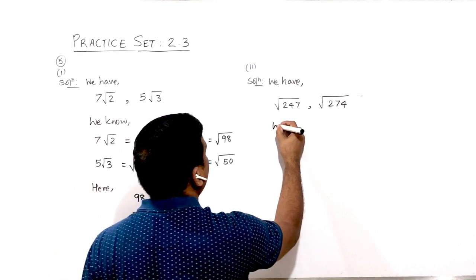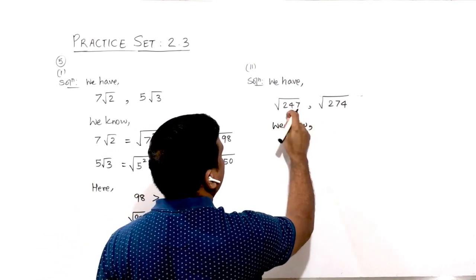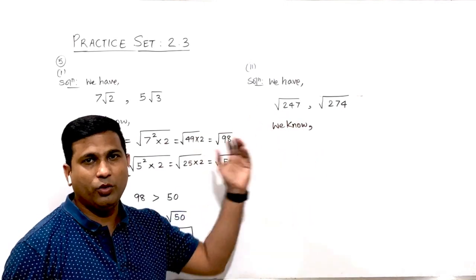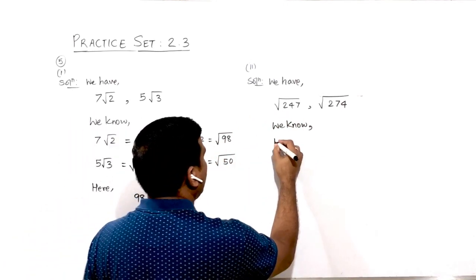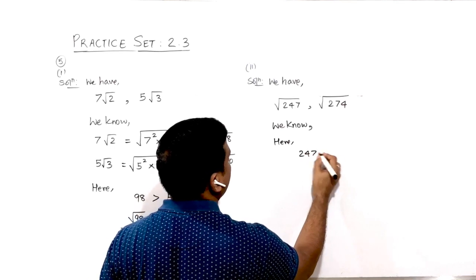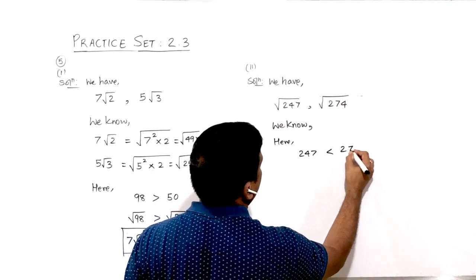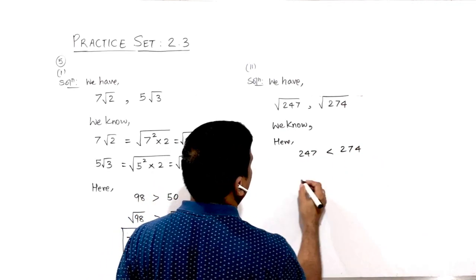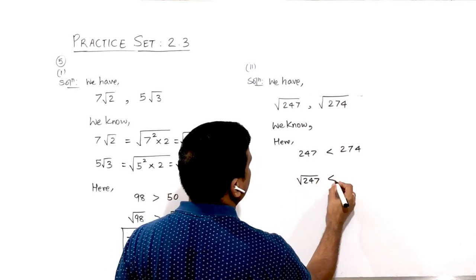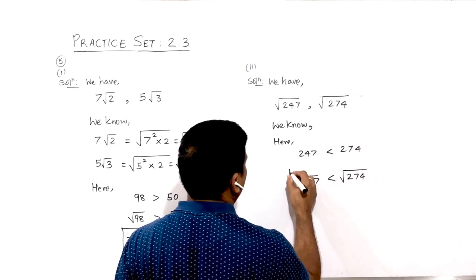For the second comparison: since the order is the same and both are in simplified form, you can directly compare them. Here 247 is less than 274, therefore √247 is less than √274.